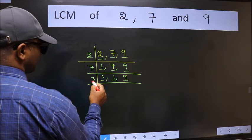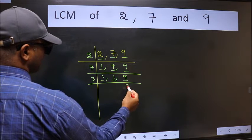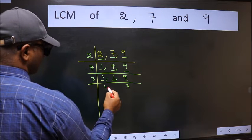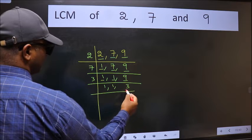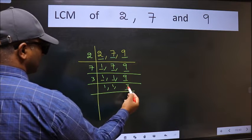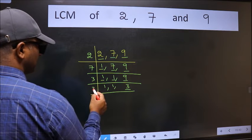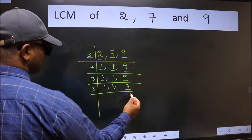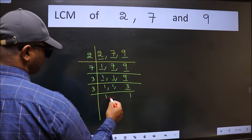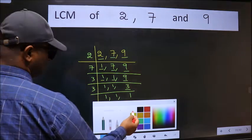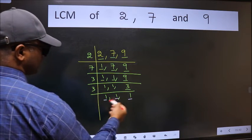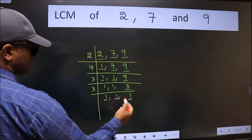9 is 3 times 3. 3 is a prime number, so 3 divides by 3. Now here we have 3, and 3 is a prime number so 3 divides by 3 again. So we got 1 in all three places.